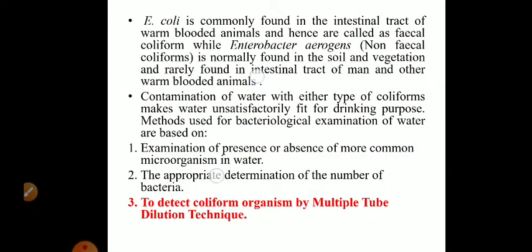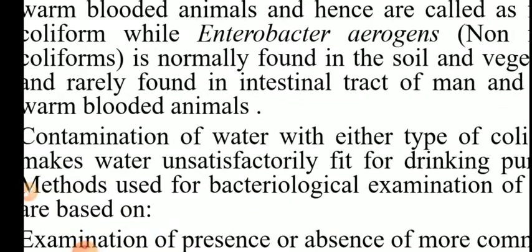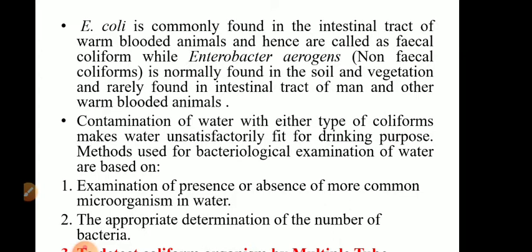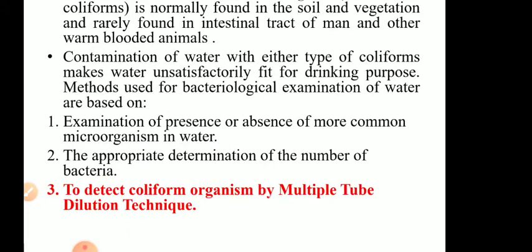We categorize coliforms into two: fecal coliforms and non-fecal coliforms. E. coli, Escherichia coli, belongs to the fecal coliform group, and Enterobacter aerogenes belongs to non-fecal coliforms. E. coli is commonly present in the intestinal tract of warm-blooded animals and humans, whether diseased or healthy, and hence it is called a fecal coliform. Enterobacter aerogenes is normally found in soil and vegetation and is rarely present in the intestinal tract, so it is called a non-fecal coliform. If water is contaminated with any type of coliform, whether fecal or non-fecal, it is unsatisfactory and unfit for drinking purposes and use in food and dairy industries.